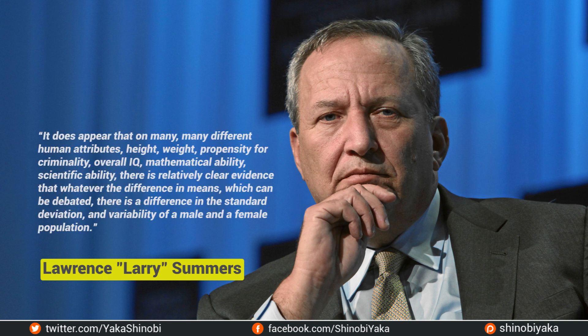Larry Summers, who was president of Harvard University, described this greater variability between the two populations in a now infamous speech delivered in January 2005. He said: "It does appear that on many many different human attributes — height, weight, propensity for criminality, overall IQ, mathematical ability, scientific ability — there is relatively clear evidence that whatever the difference in means, which can be debated, there is a difference in the standard deviation and variability of a male and female population." We can paraphrase this statement thus: you can argue about the averages, but the shape of the graphs is consistent — there is simply more variability within the male population across traits. After having the temerity to utter this simple observation, Larry Summers became the focus of outrage and controversy. Eventually, he resigned his position.